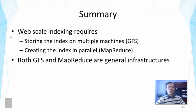To summarize, web-scale indexing requires new techniques beyond traditional indexing. First, the index must be stored on multiple machines using a distributed file system like the Google File System. Second, the index must be created in parallel using the MapReduce framework because the data is so large. Note that both GFS and MapReduce are very general frameworks and can support many other applications beyond web indexing.